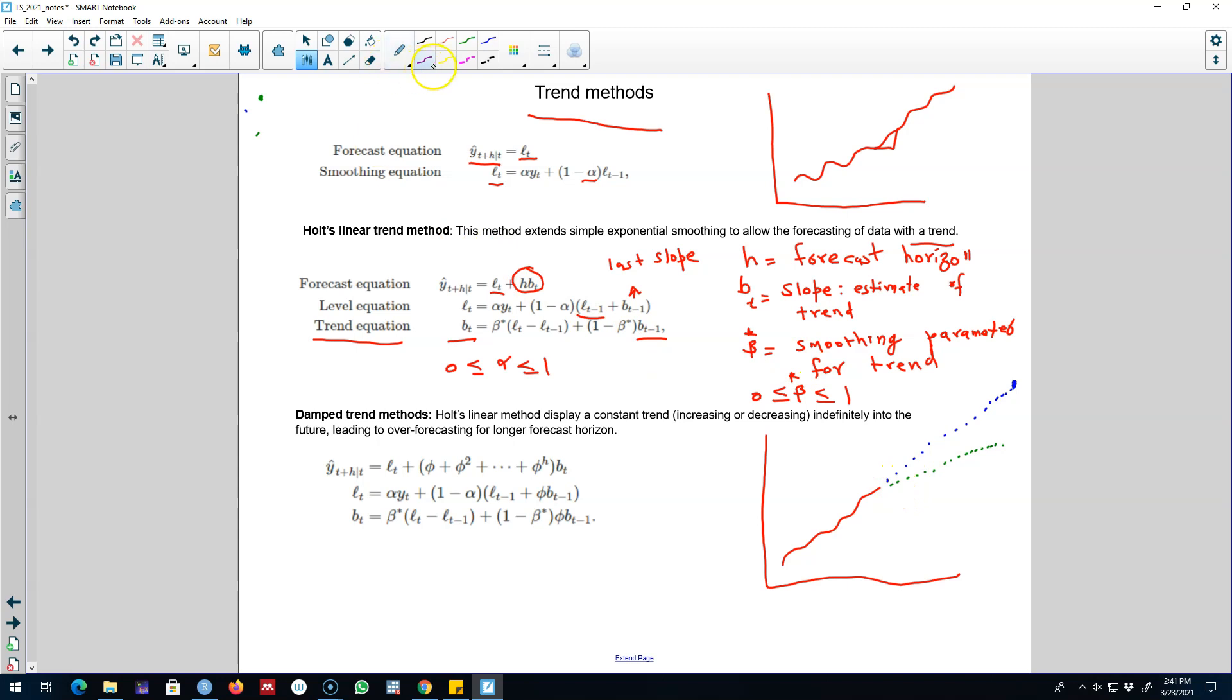So to do that, what we can do is based on our previous three equations, we can introduce another parameter phi. And now all of our three equations will contain this phi parameter. This phi parameter will control the dampening that we want to introduce in our trend. Typically we restrict the value of phi between 0.8 and 0.98.